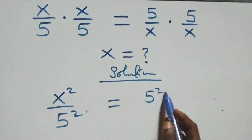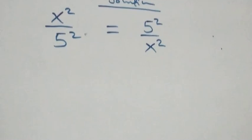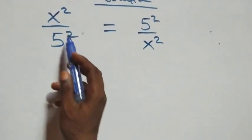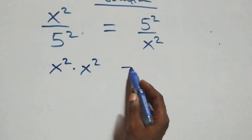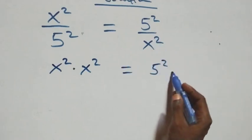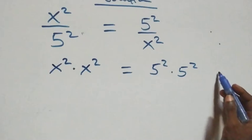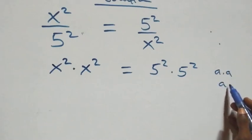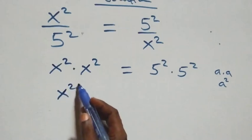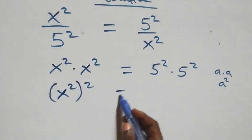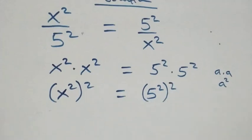Then over, also x times x we have x squared. Next step here we cross multiply: x squared times x squared equals five squared times five squared. This follows when we have a times a which is also a squared — multiplying, we can write this as x squared squared equals five squared squared.